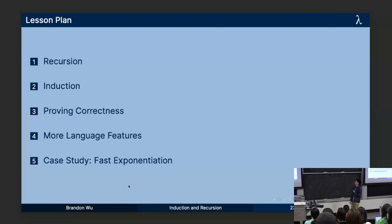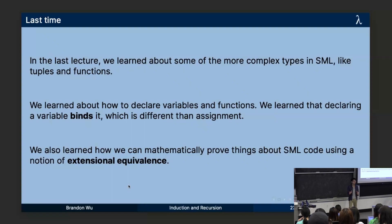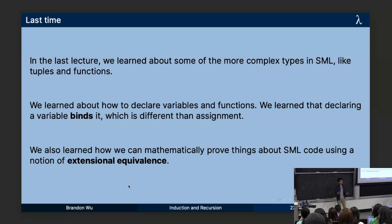Last lecture — remember, that was Thursday, so long ago — we learned about some new types: tuples, function types, all pretty cool things in SML. We also talked about variable binding, how we can bind a variable and that changes our environment, and how that's different than assignment. Would anyone like to hazard a guess — why is binding different than assignment?